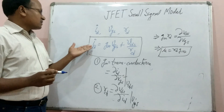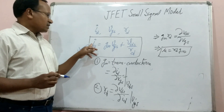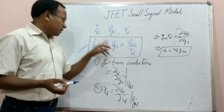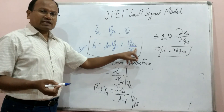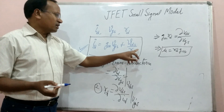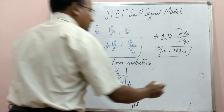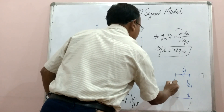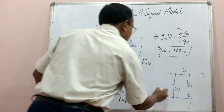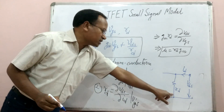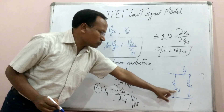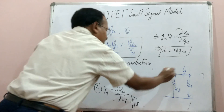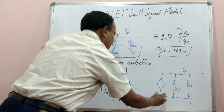Can we draw an equivalent circuit based on this equation? Yes. The drain current ID is divided into two parts: one part depends on VGS, giving a voltage-dependent current source. The other part is VDS/RD, which corresponds to a drain resistance RD connected from drain to source, with current VDS/RD flowing through it. If we draw small RD here, the component of drain current flowing through that branch is VDS/RD.